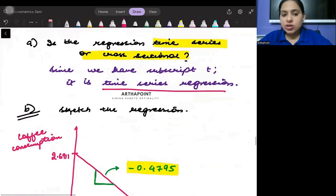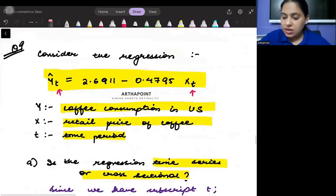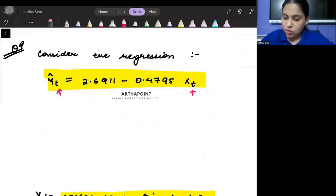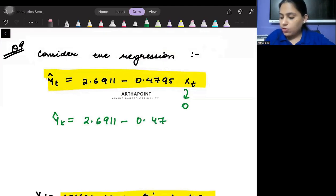The second question says sketch the regression. To sketch the regression, I need to go ahead and put X as 0. When I plug X as 0, I will get Ŷt = 2.6911 - 0.4795 × 0, which equals 2.6911.